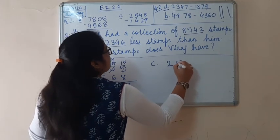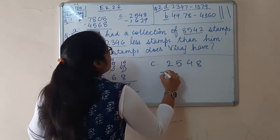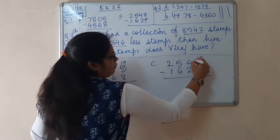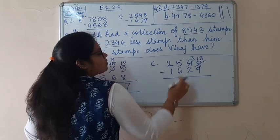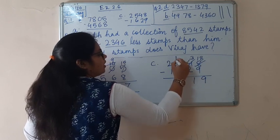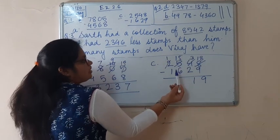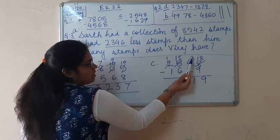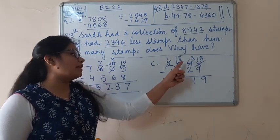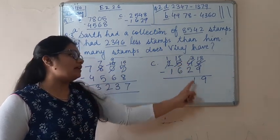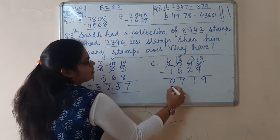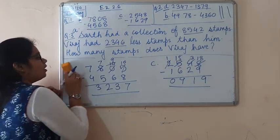Let's solve question c: 2,548 minus 1,629. 8 minus 9 is not possible, so let's borrow 1 from 4 — so 4 becomes 3. 18 minus 9 is 9. 3 minus 2 is 1. Now, as you can see here I have put 15, because nothing was borrowed at that position, so directly it becomes 15. 15 minus 6 is 9. This is how you write it in your notebook.